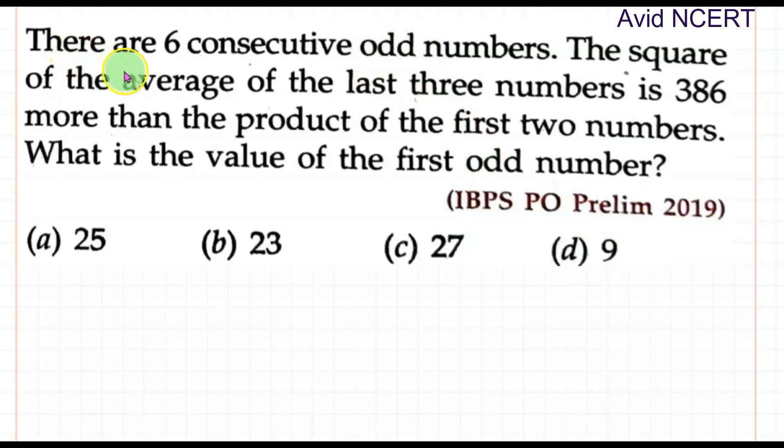There are six consecutive odd numbers. The square of average of the last three numbers is 386 more than the product of the first two numbers. What is the value of the first odd number?